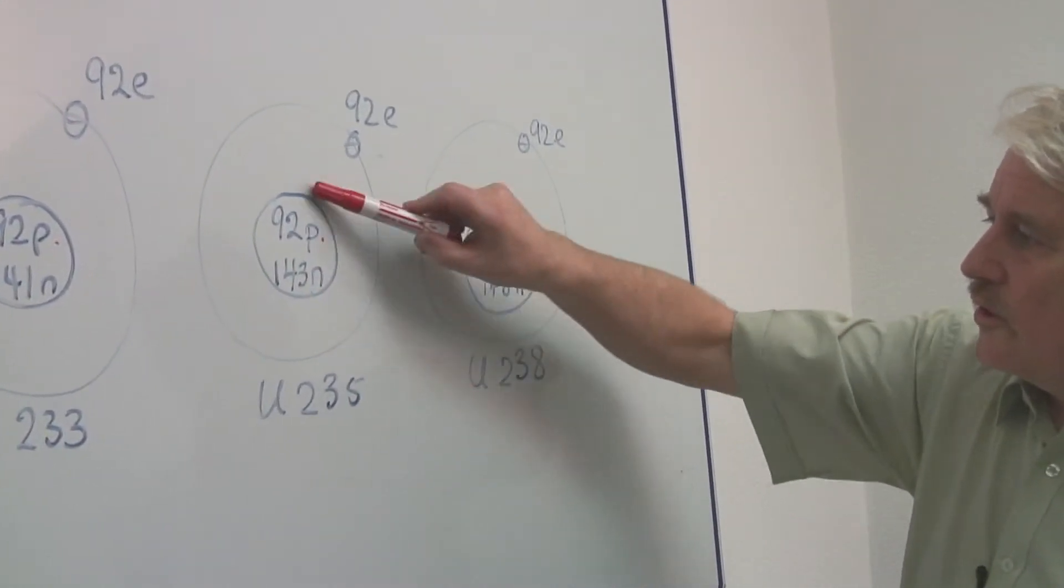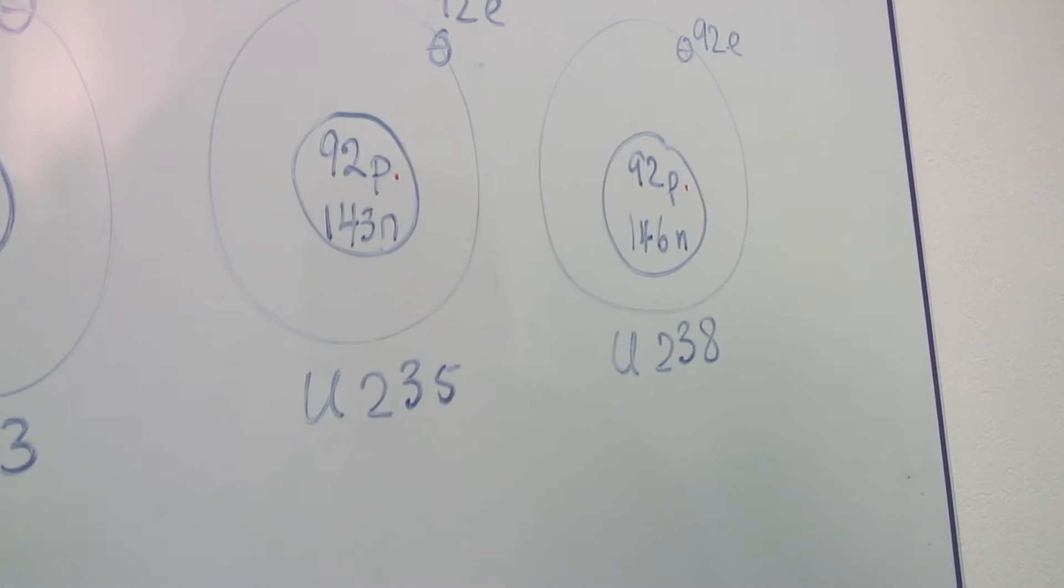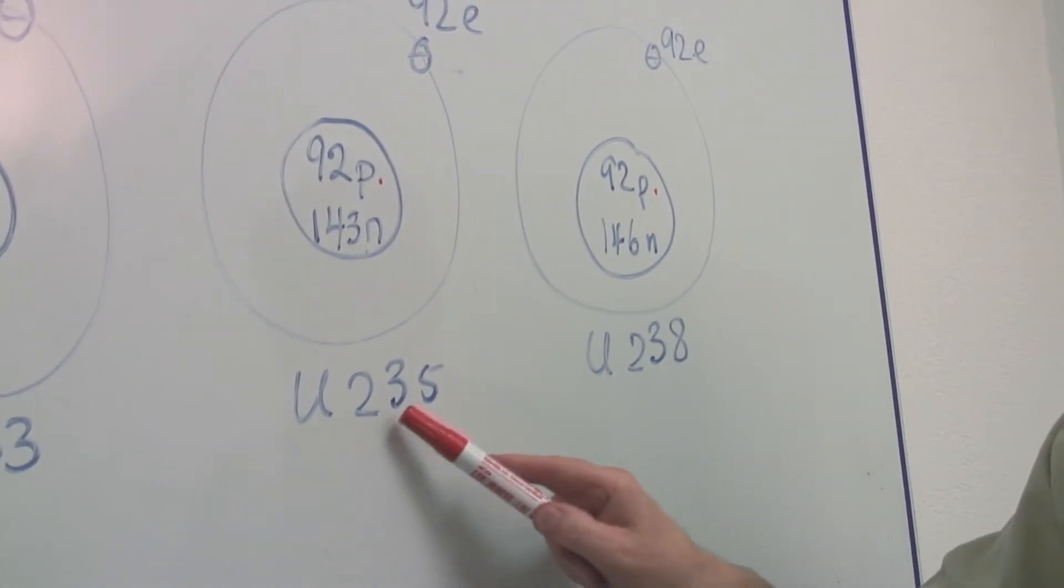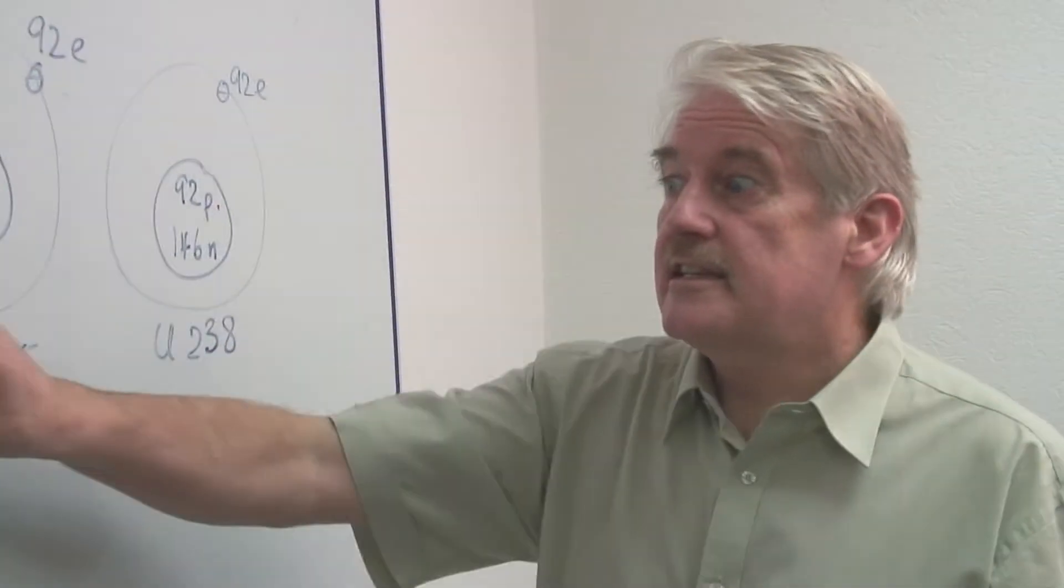Here, total of two hundred and thirty-five. So when they talk about U two three five, it is the number of particles in the nucleus. It's distinctive from that.